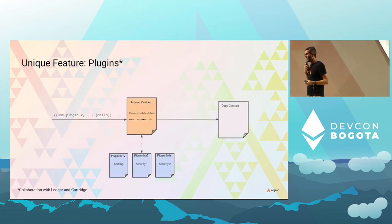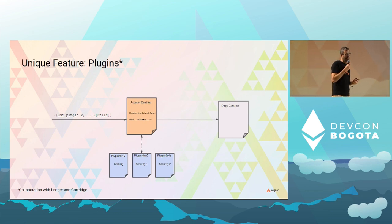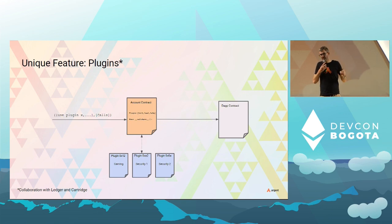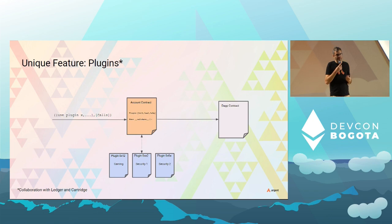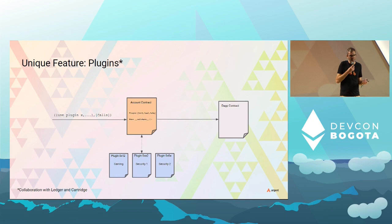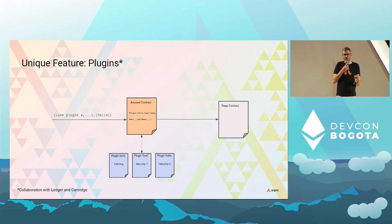We're also experimenting with modular accounts, in collaboration with Cartridge and Ledger. Your account is a base contract on top of which you can add plugins, each with different logic to validate and execute transactions — a plugin for session keys, another that works like an EOA signer, another with stronger security using multi-sig or social recovery. As a user you pick and choose the plugins you want. A gaming wallet holding maximum $50 may not need the same security requirements as the wallet you use for DeFi trading.